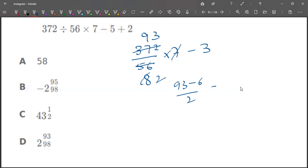93 minus 6 by 2. 93 minus 6 is 87. 87 by 2. 94, 4, 3, 6. 4, 3, 4, 3, 4, 3, 1 by 2. So our answer is option C.